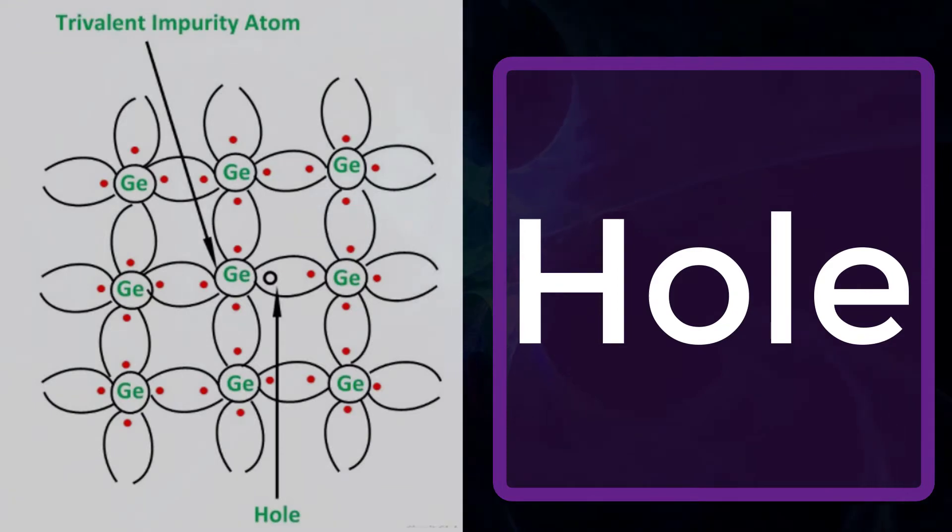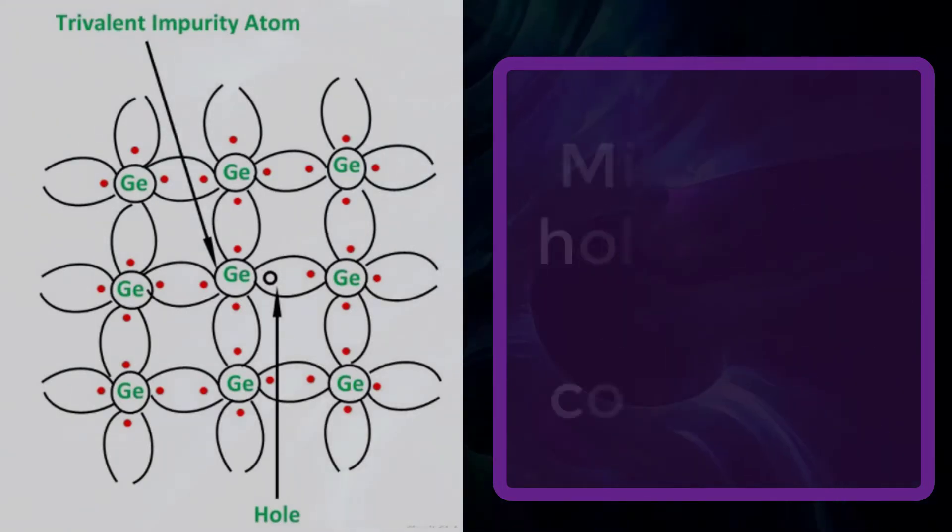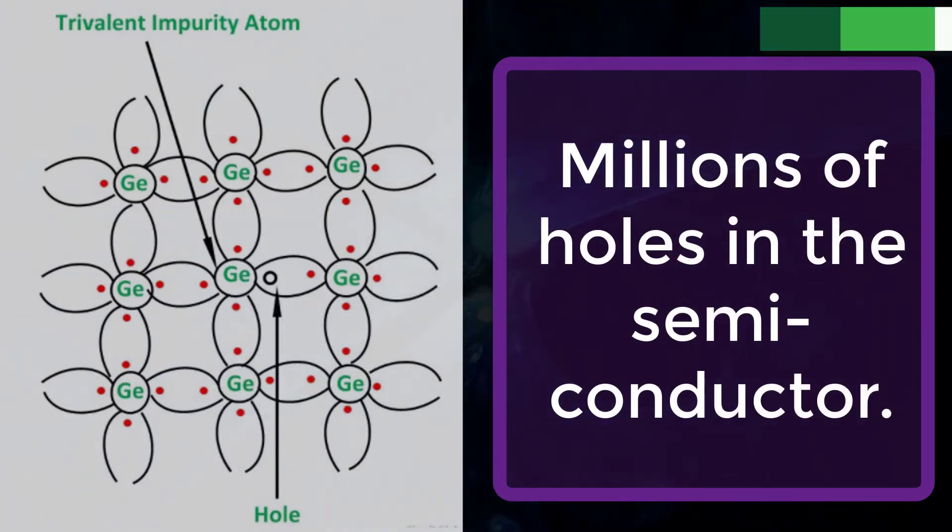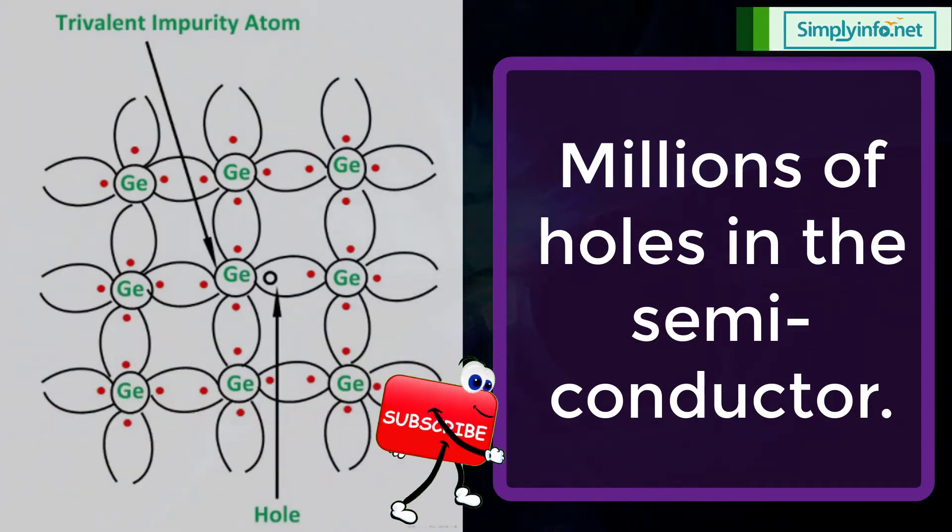Thus, each gallium atom provides one hole in the germanium crystal. As an extremely small amount of gallium impurity has a large number of atoms, therefore it provides millions of holes in the semiconductor.